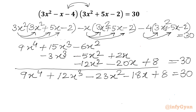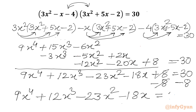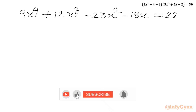Now subtract 8 from both sides. So we have 9x⁴ + 12x³ - 23x² - 18x - 12 = 22. Now we have to solve this quartic equation.